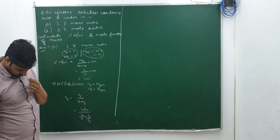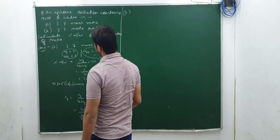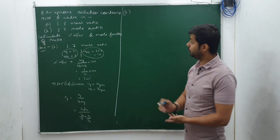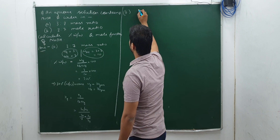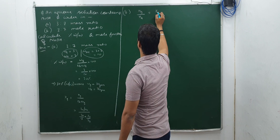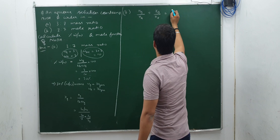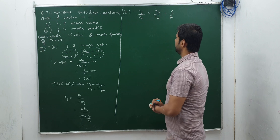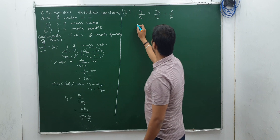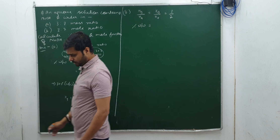Now second part B: 3:7 mole ratio. That means N_B / N_A = 3/7, which is always equal to ξ_B / ξ_A as discussed. Now how will you calculate percentage w/w from a mole ratio?